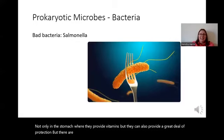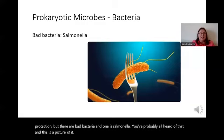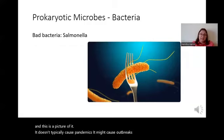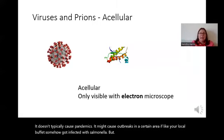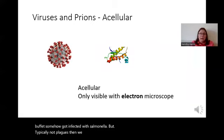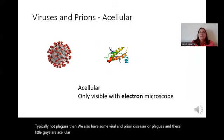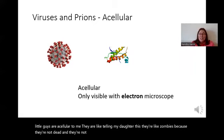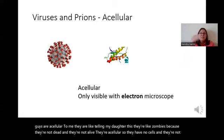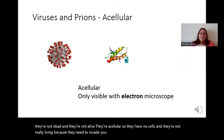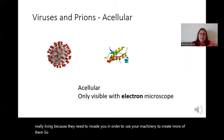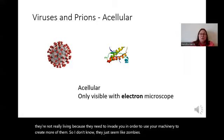There are bad bacteria, and one is salmonella — you've probably all heard of that. It doesn't typically cause pandemics; it might cause outbreaks in a certain area. Then we also have viruses and prion diseases. These little guys are acellular — they're like zombies because they're not dead and they're not alive. They have no cells and they're not really living because they need to invade you in order to use your machinery to create more of them. They are only visible with an electron microscope.